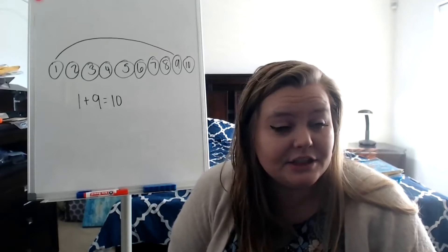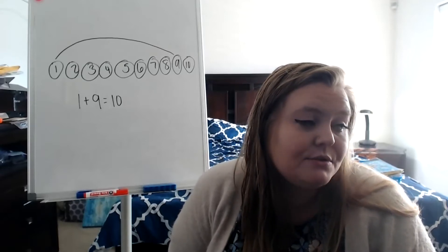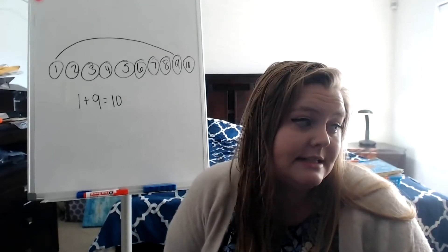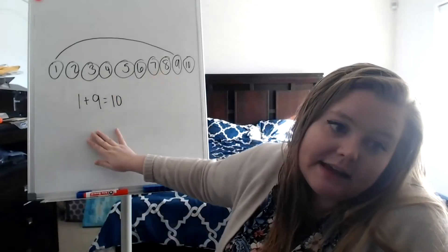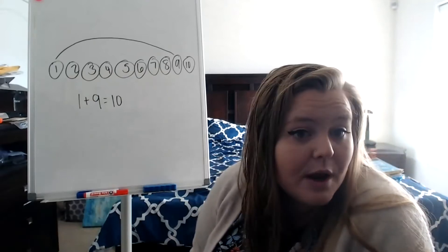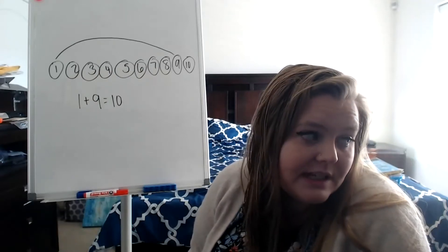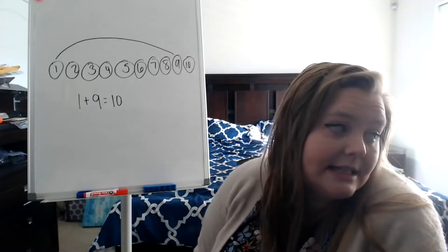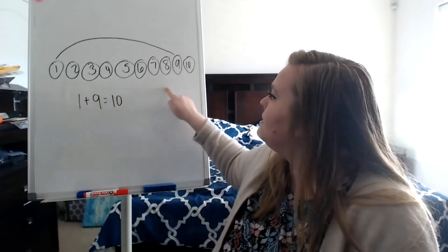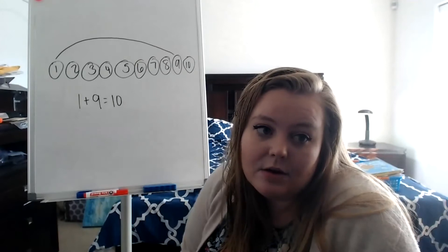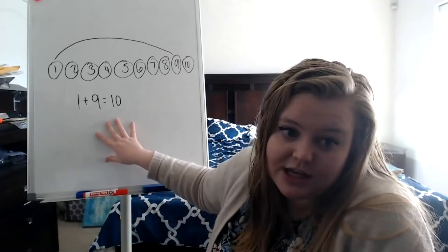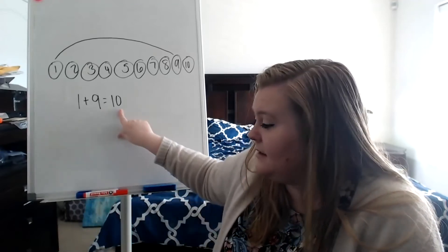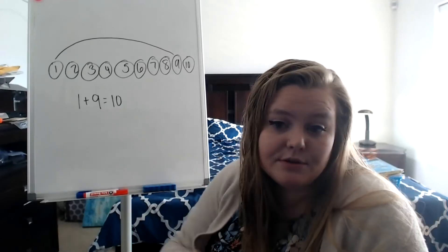Then it says for a challenge, try finding all of the pairs that add to 12, 15, 18, 20, 11, 13, 17, 14, 16, and 19. So after you've figured out the matches that give you 10, it's asking you to find pairs from the numbers here that would give you those higher numbers. For example, for the challenge number 11: if I matched the one to the ten, when I add one and ten that gives me 11 — so that could be a problem you write for your challenge answer.